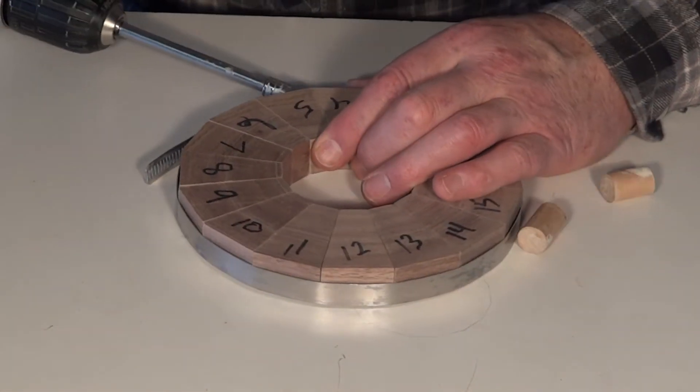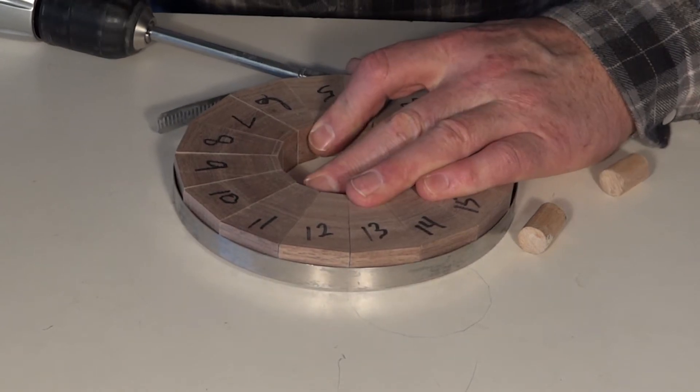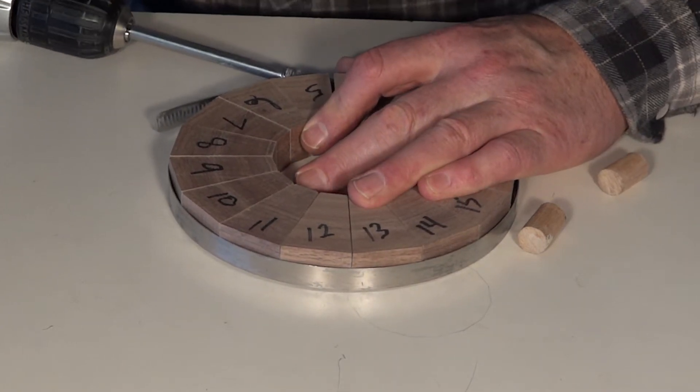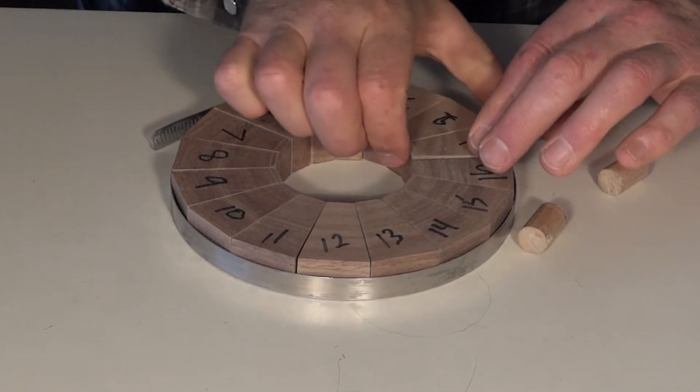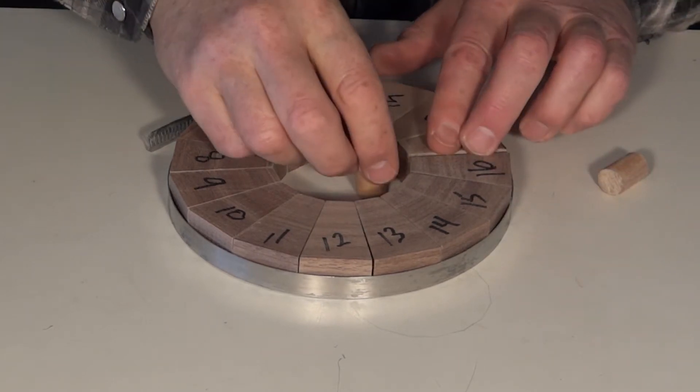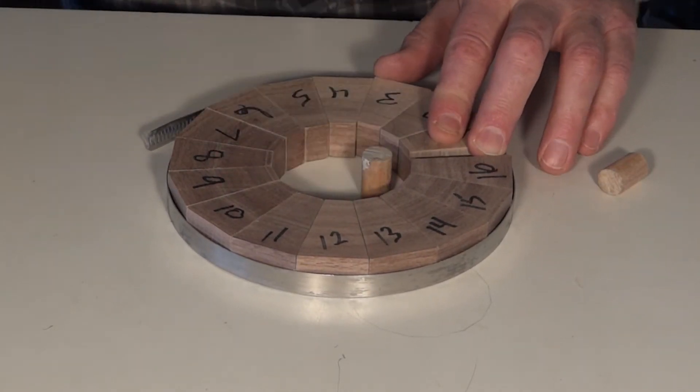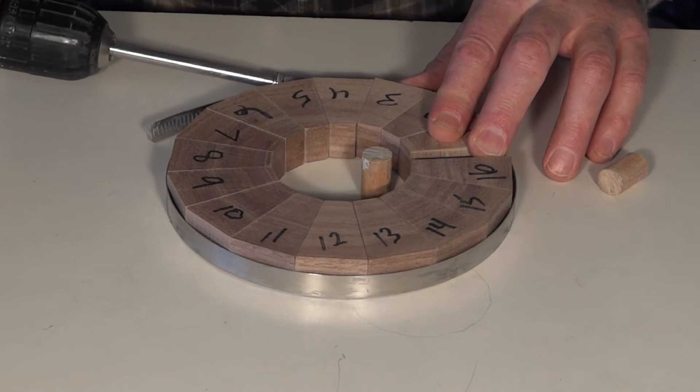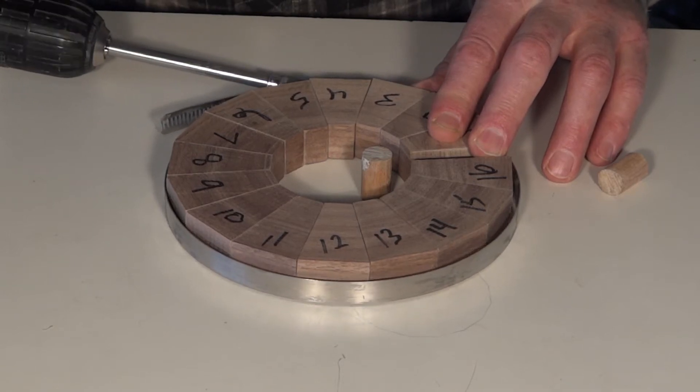Occasionally, no matter how well your segment adjuster is calibrated, you will find that there are gaps between your segments. A slight waver when sanding the segments that you don't even notice can be enough to cause your ring to be less than perfect. When this happens, you can glue the ring up with the half ring method as I'm doing here.